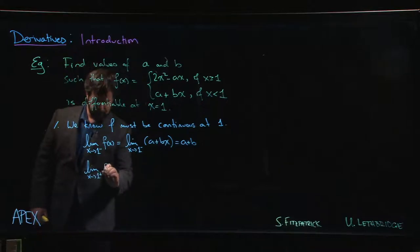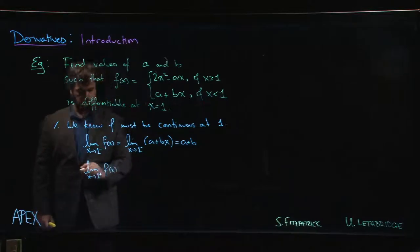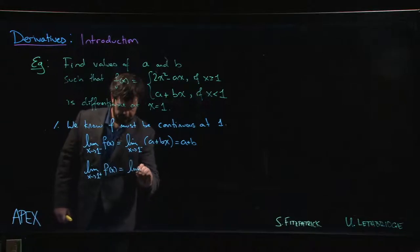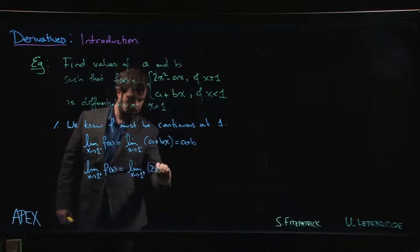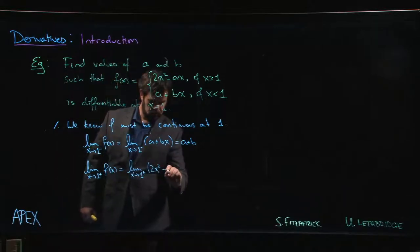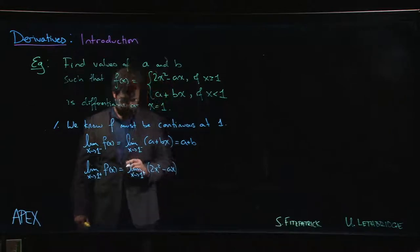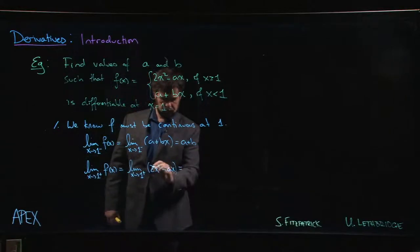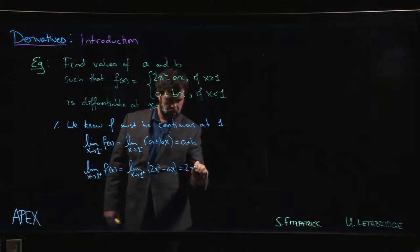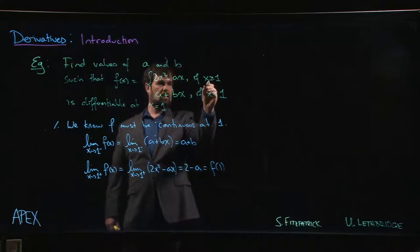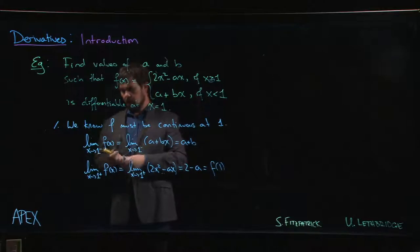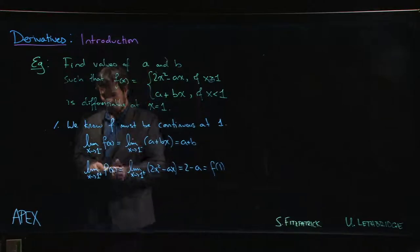On the other hand, if we approach from the right, well then we have to use 2x² - ax, and that's going to give me 2 - a. And of course that's also the value of f(1) because we have the equals here.